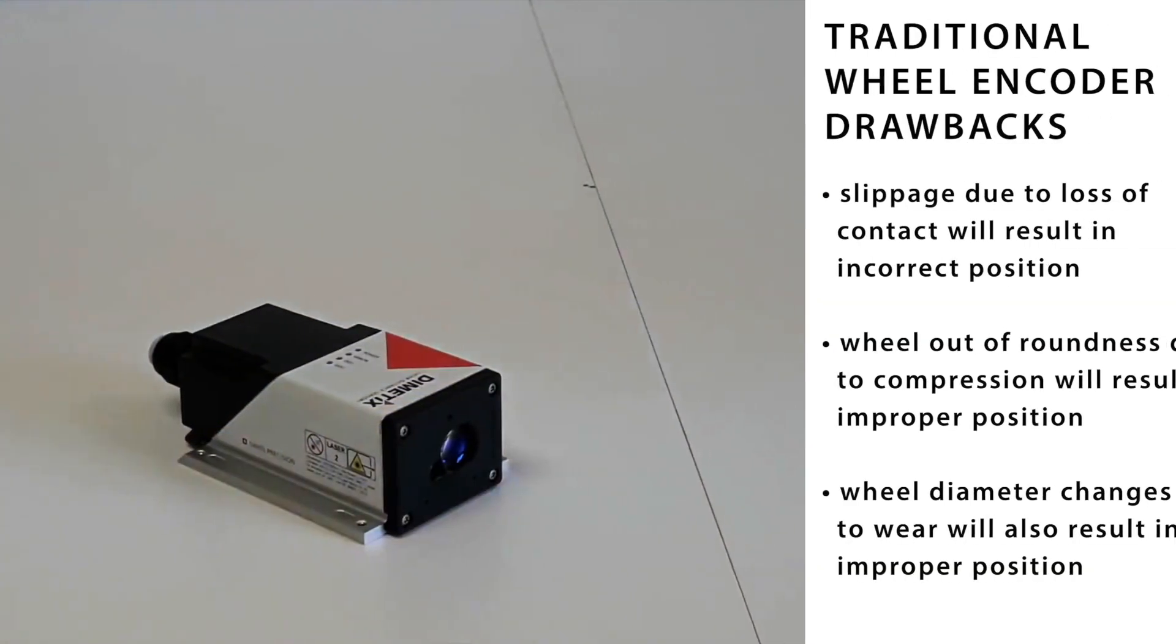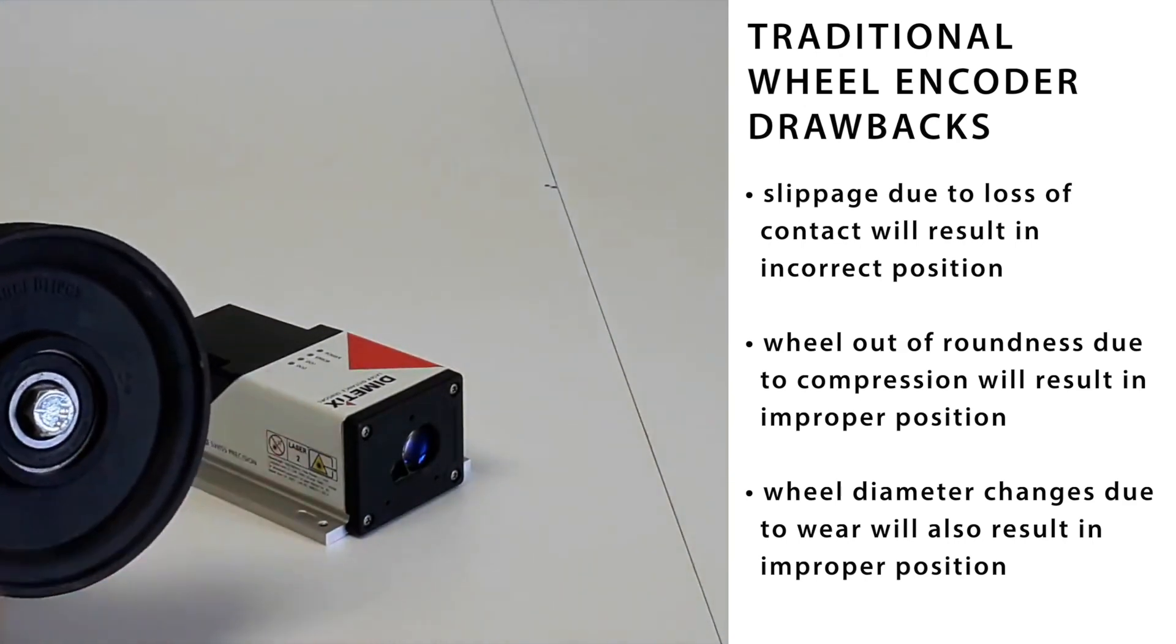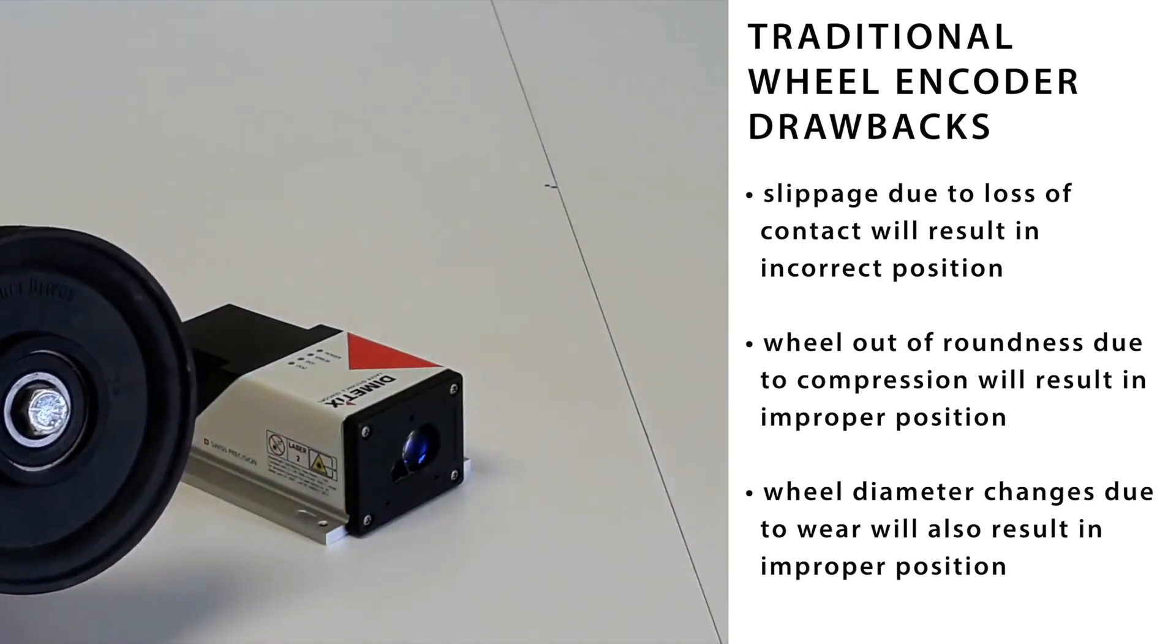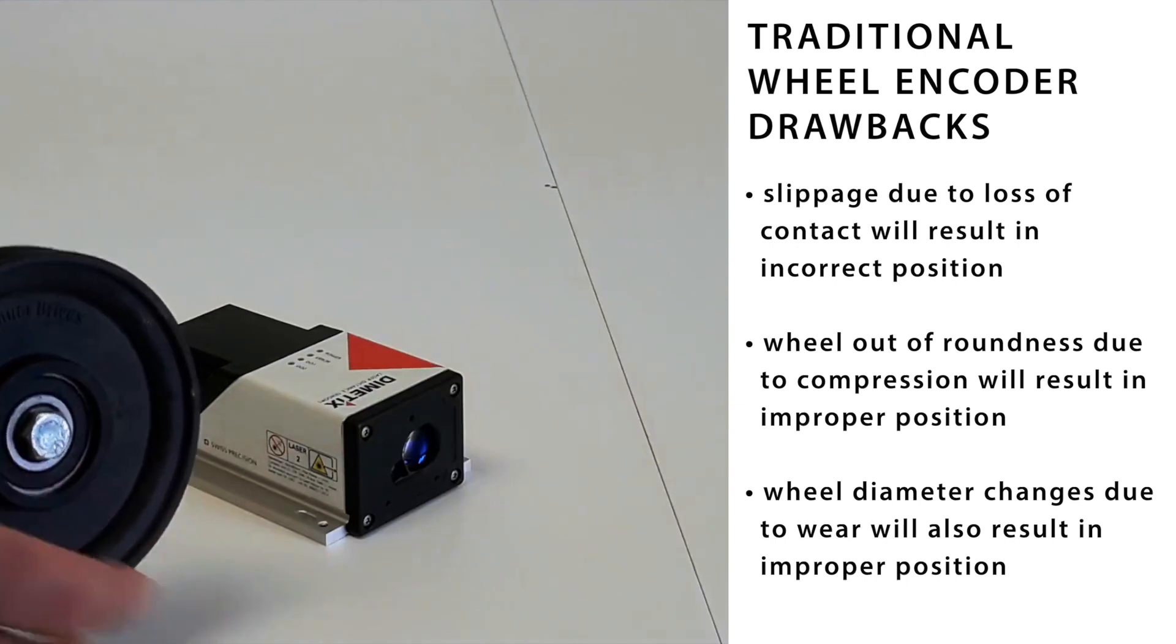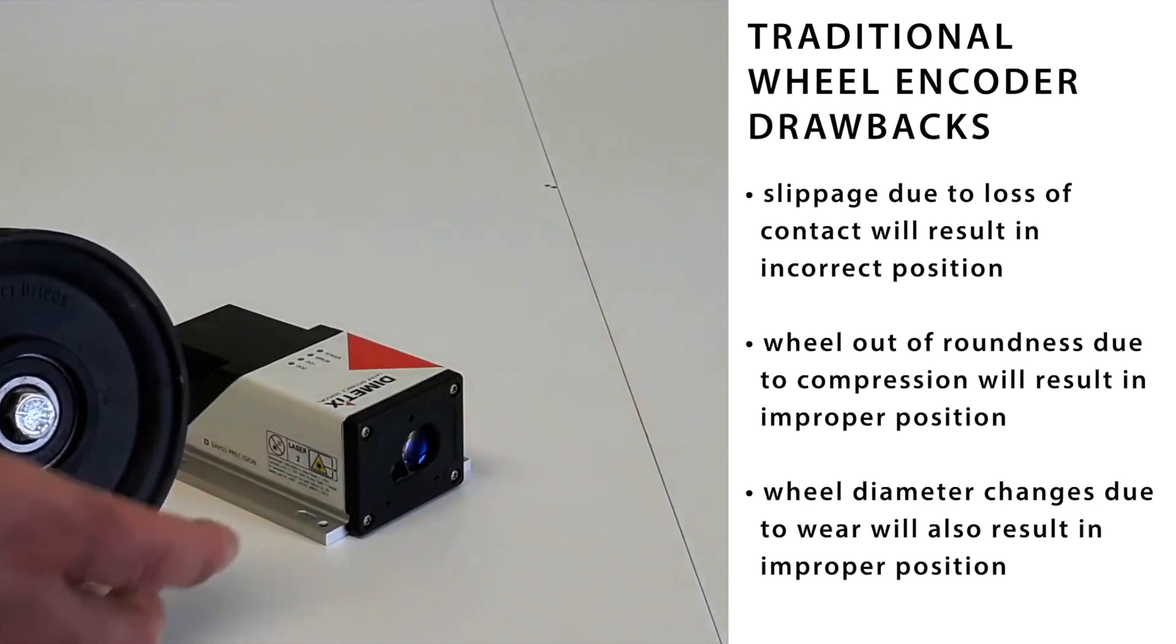Traditionally wheel encoders have drawbacks. Slippage due to loss of contact will result in an incorrect position. Wheel outer roundness due to compression will also result in an improper position, as will the diameter changes of the wheel.